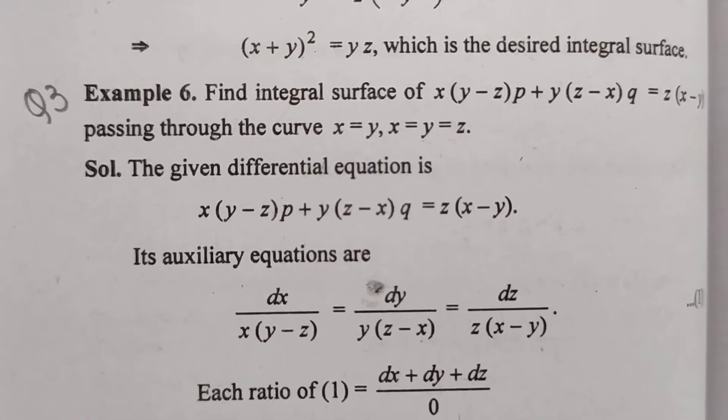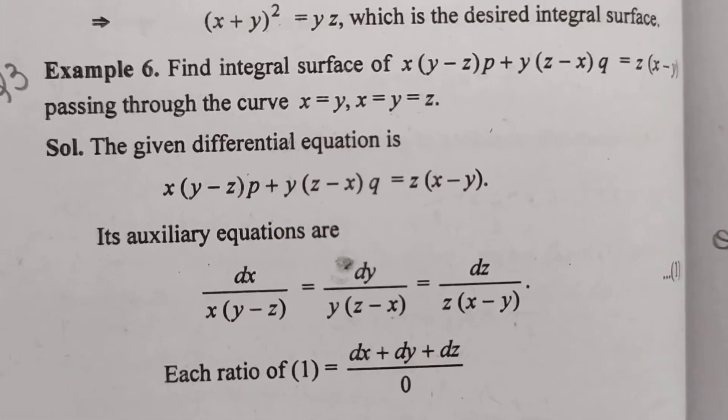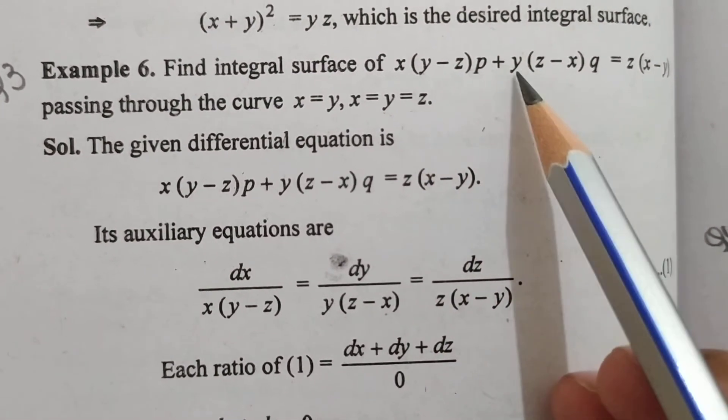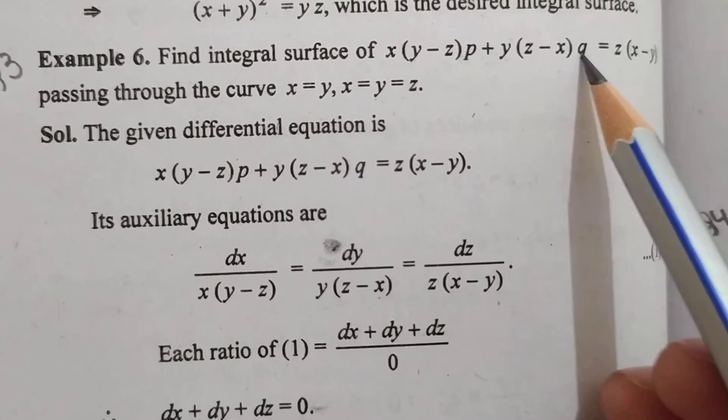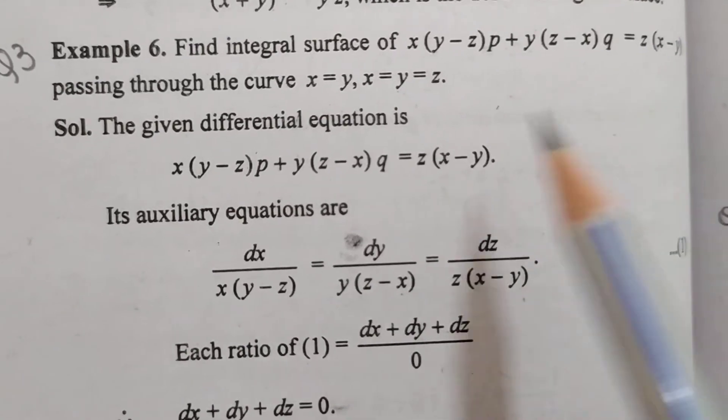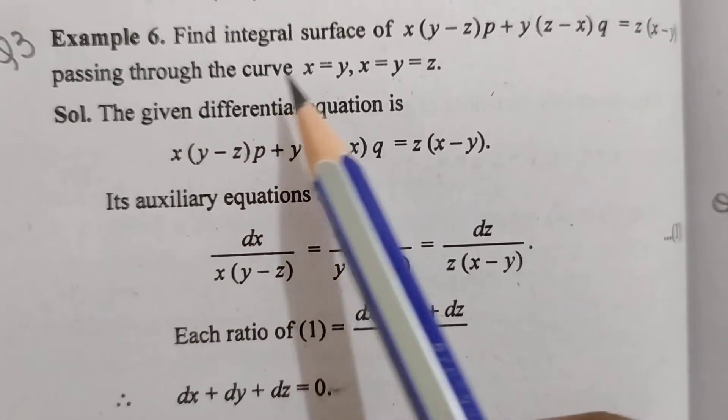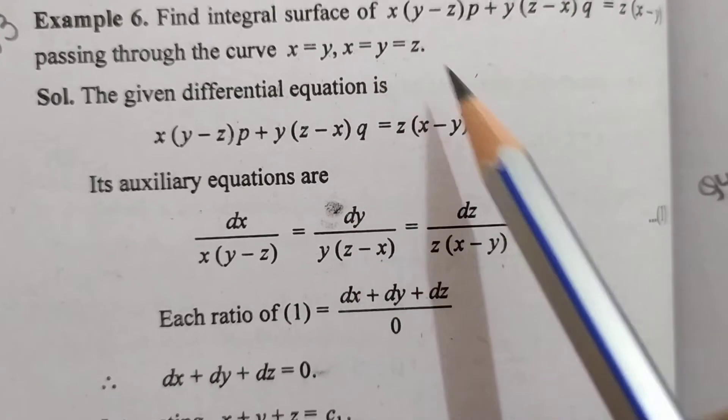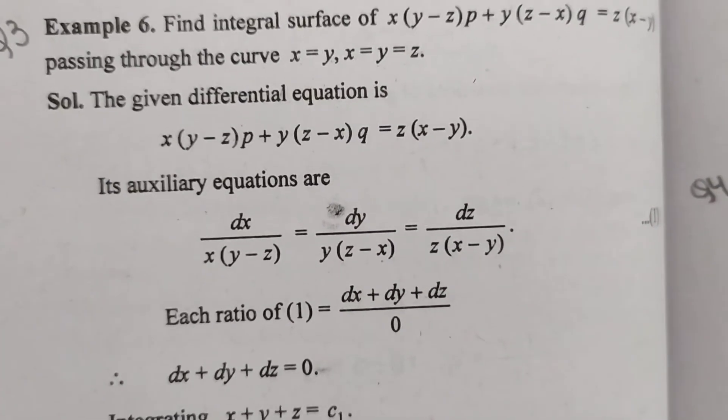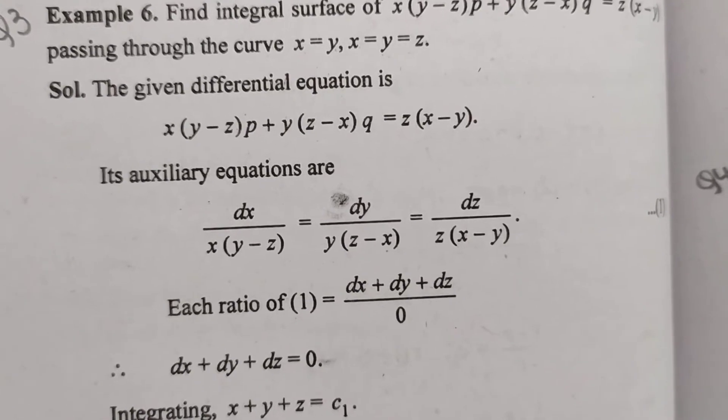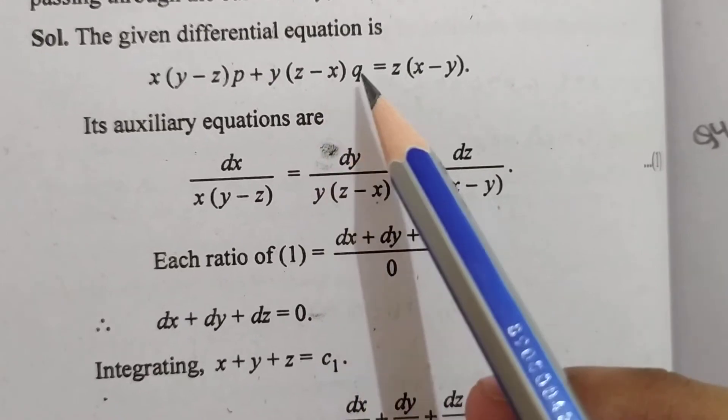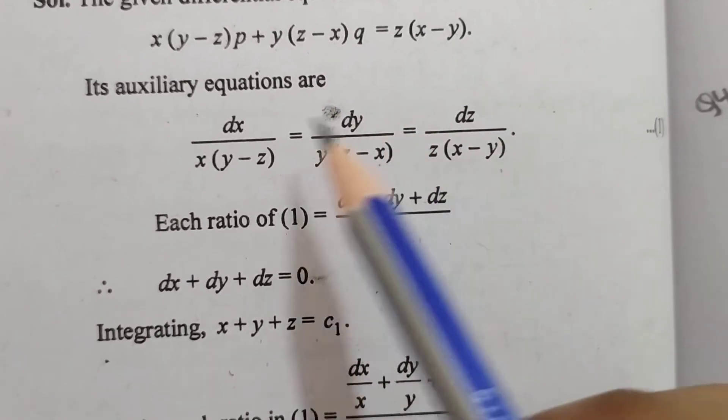Question 3. Find integral surface of x(y-z)p + y(z-x)q = z(x-y), passing through the curve x equals y, x equals y equals z. The given differential equation is x(y-z)p + y(z-x)q = z(x-y).